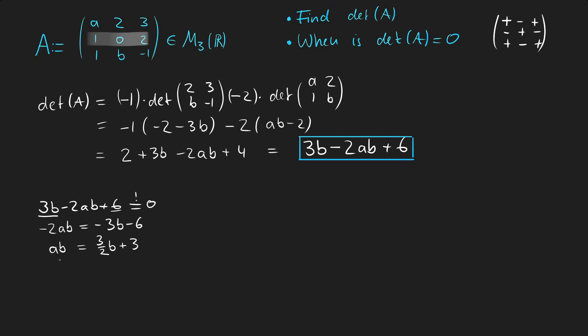And the last step is to divide both sides by B. And then we know that A equals 3 over 2 plus 3 over B. Hence we know that the determinant of A equals zero when A equals 3 over 2 plus 3 over B. But of course we are not allowed to divide by zero, and that is why we have to require B to be not equal to zero.